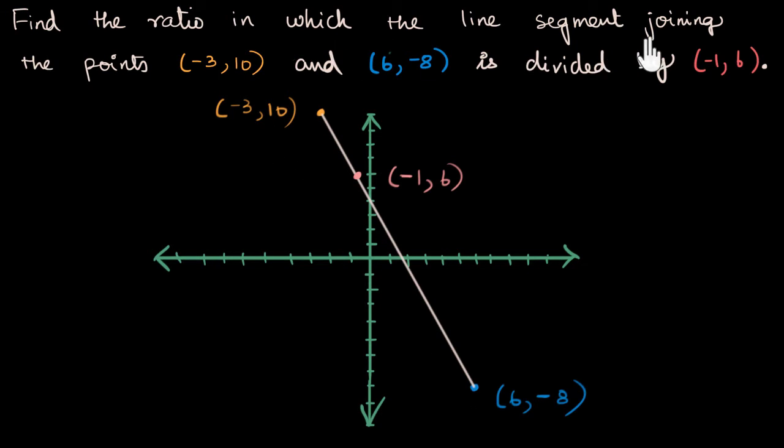Find the ratio in which the line segment joining these two points is divided by (-1, 6) is a long way of asking, can you find this length by this length? I want this length and I want that to be divided by this length over here.